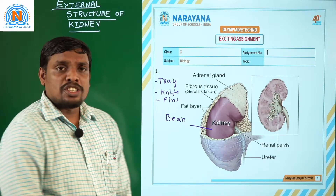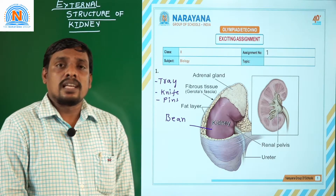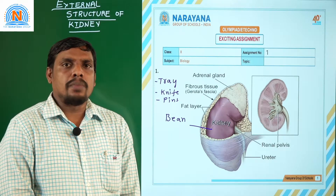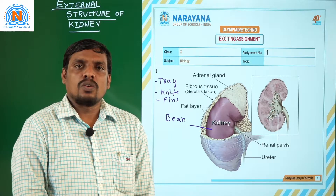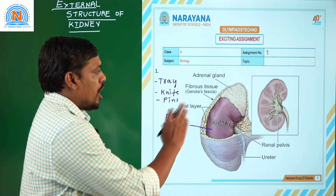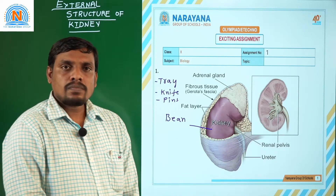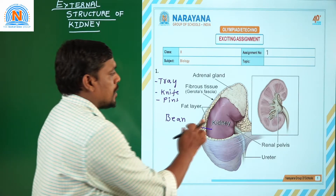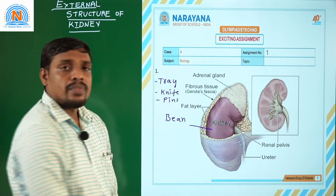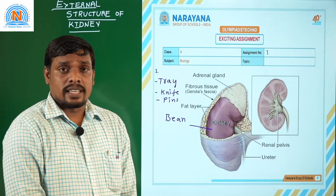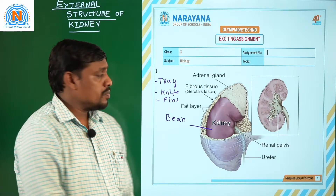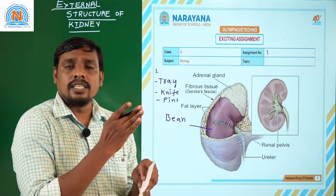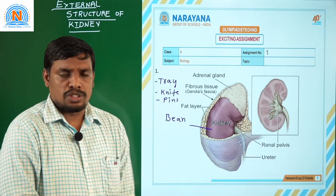Take a freshly collected goat kidney or sheep kidney from the butcher. After collection, wash it thoroughly. Then place this kidney inside the tray. After placing it inside the tray, with the help of a knife, slowly cut it in longitudinal position.